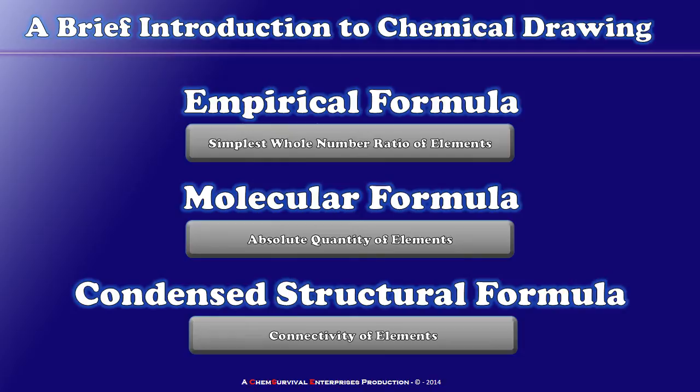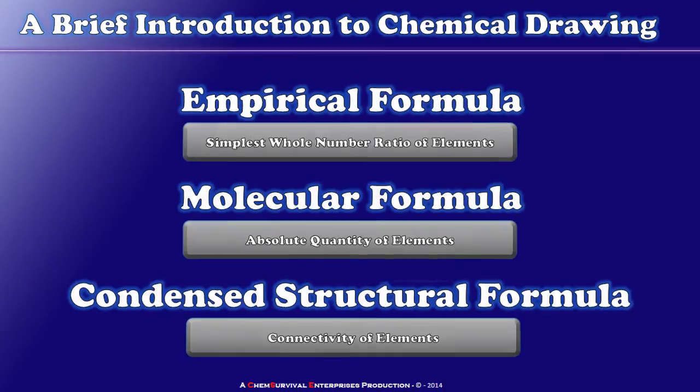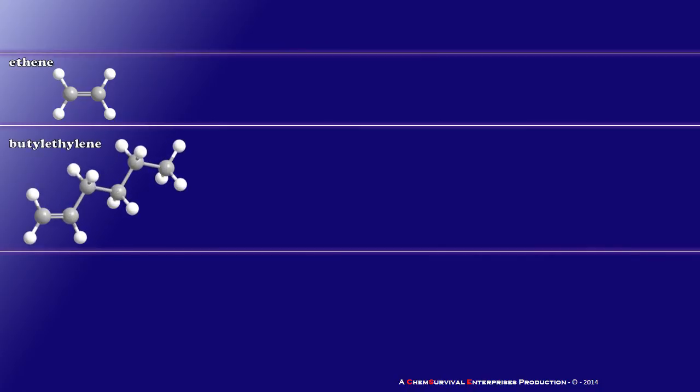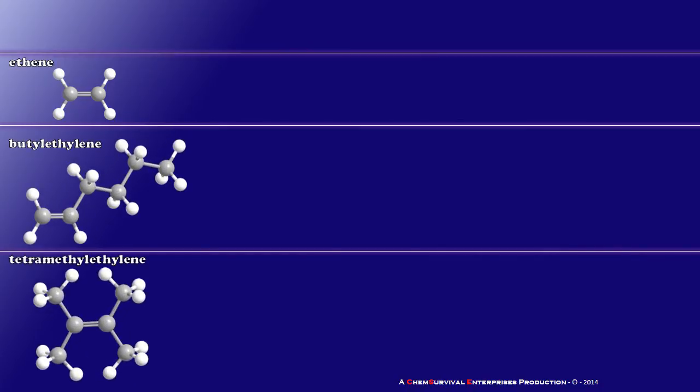Let's take a look at how each of these three gives us progressively more information, allowing us to distinguish more and more similar molecules from one another. To illustrate, we're going to look at three different molecules: ethene or ethylene, butylethylene, and tetramethylethylene — all very common hydrocarbons one might encounter in the organic chemistry lab.